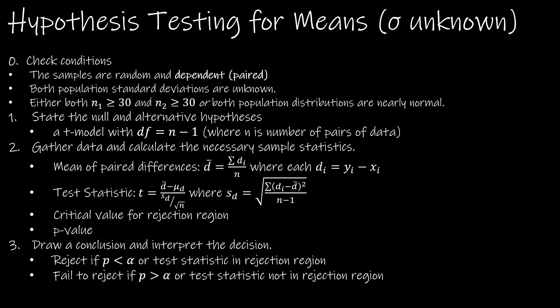Here's your summary page. We're going to check the conditions: the samples are random and dependent or paired. We don't know either population standard deviation. Either both N1 and N2 are greater than or equal to 30, or both are nearly normal. This is a T model, and the degrees of freedom is just N minus one, where N represents the number of pairs of data.